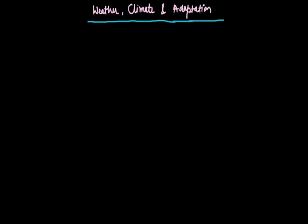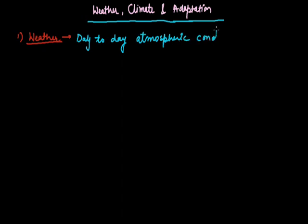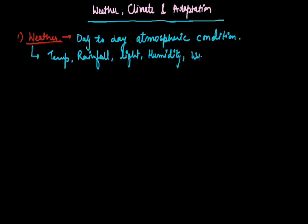Now the first term weather. Weather is actually about the day to day condition of our climate, or day to day atmospheric condition. This one is calculated for a short duration in which temperature, rainfall, light intensity and duration of light, humidity, wind velocity etc. are considered.